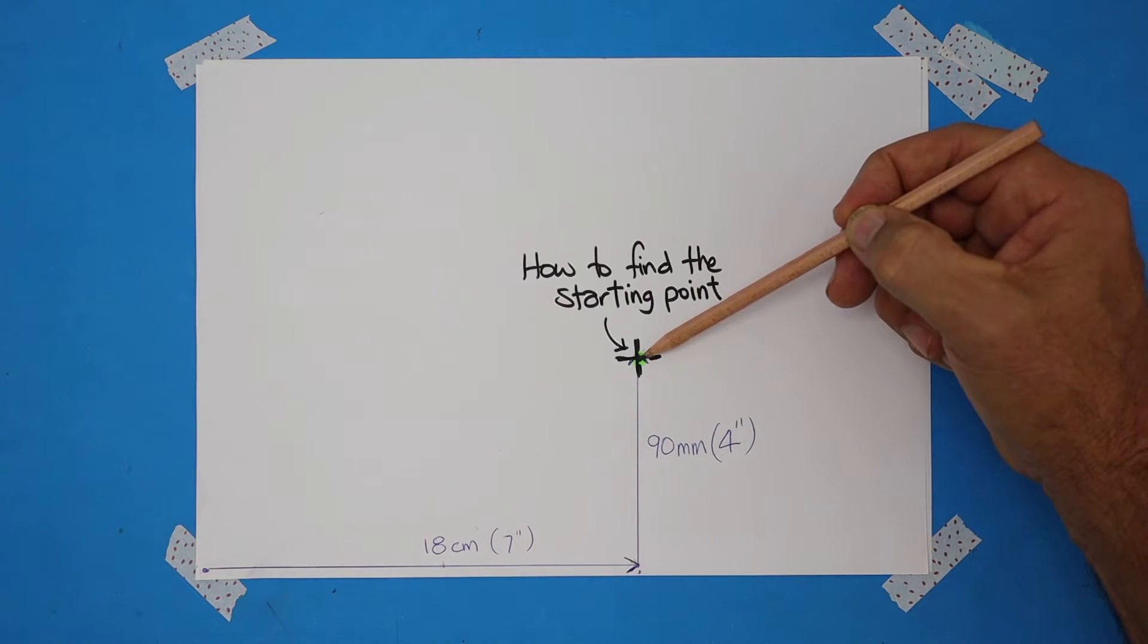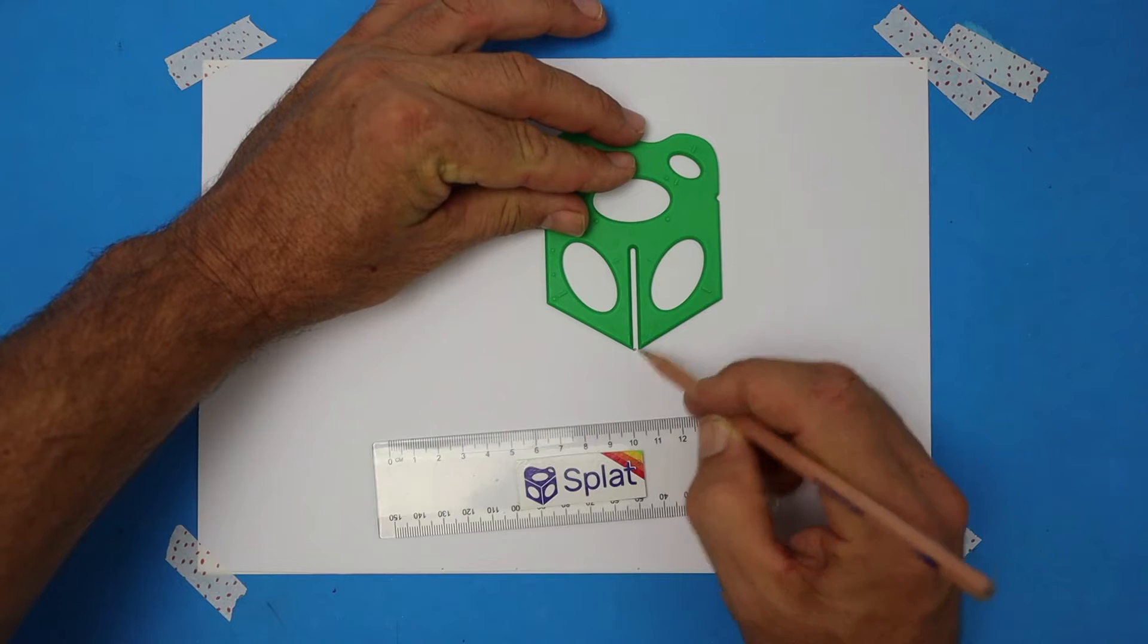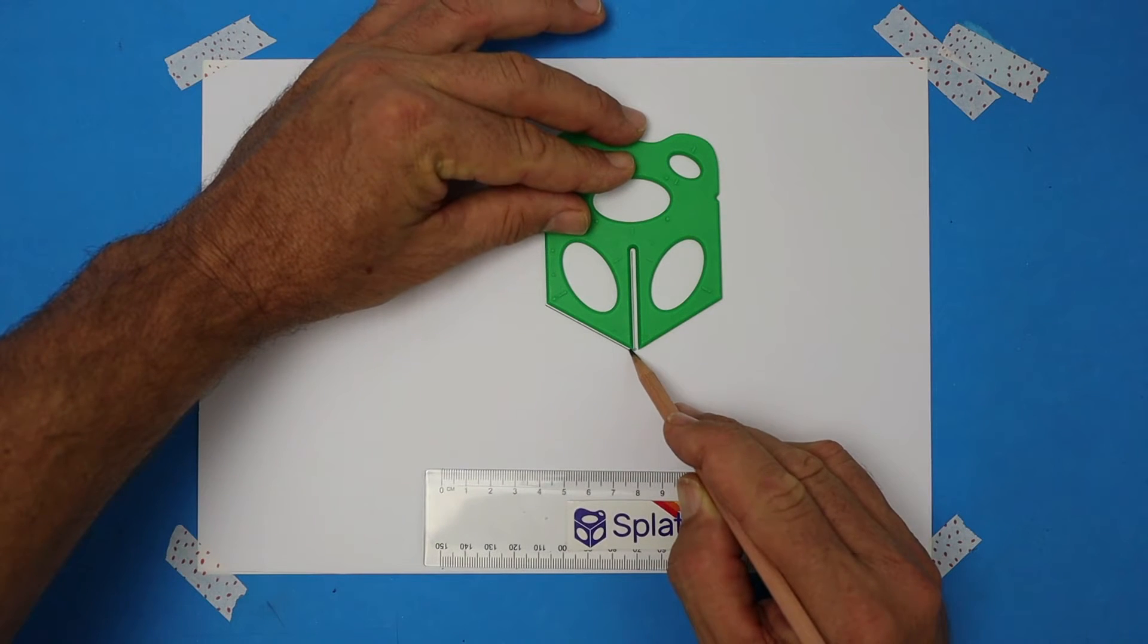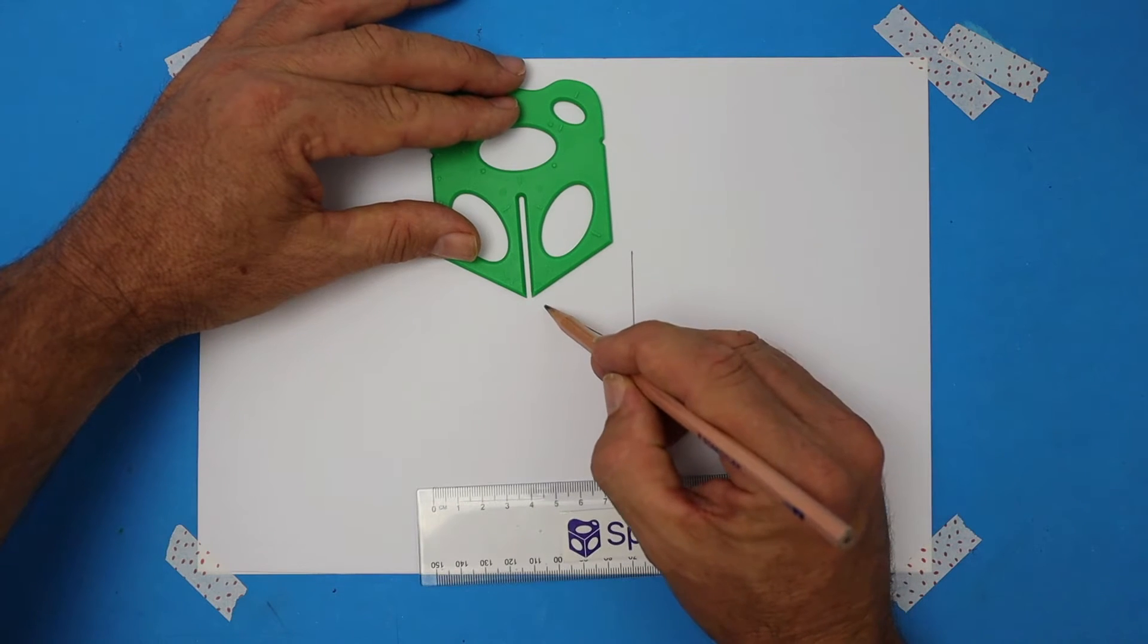From that starting point, we'll place the point of the splat on it and we're tracing around just two lines. Let's complete a small triangle.